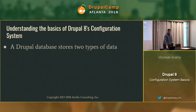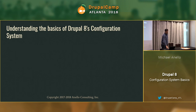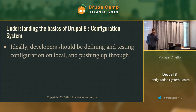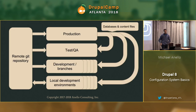Drupal's database generally has two types of data: content and configuration. One is obviously dependent on the other. Ideally, in a solid developer workflow, you're developing locally and making code changes locally — not remotely on a dev server. If you're building a new content type, you're doing that locally, making sure it all works, and then pushing it up through your dev, test, and production environments.